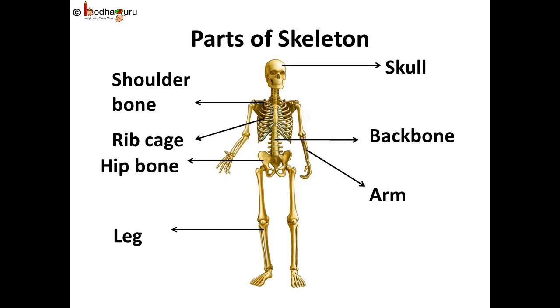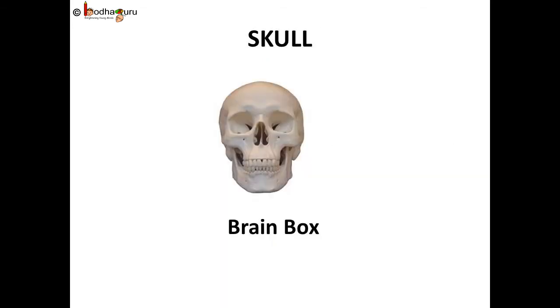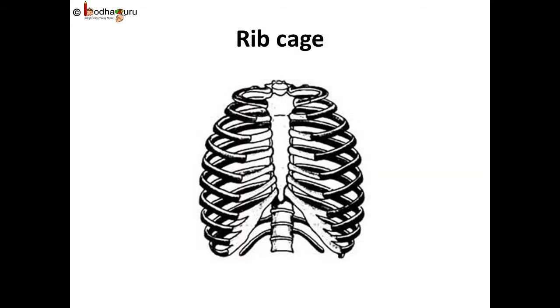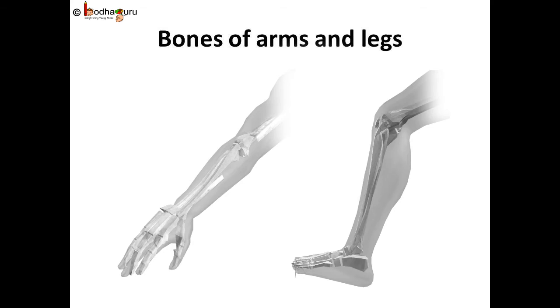The skeleton consists of the skull, the backbone, the rib cage, the bones of arms and legs, the shoulder bones and the hip bones.